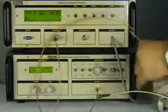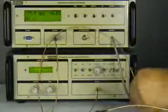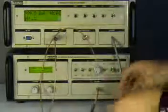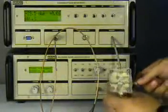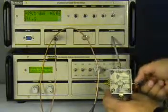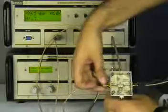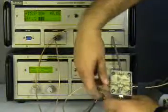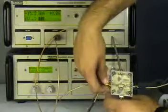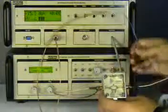Now we will show the operation of a pin diode switching attenuator similarly. We have a pin diode switchable attenuator. We will connect the output port to the power sensor and the input port to the source.